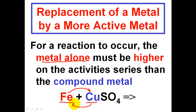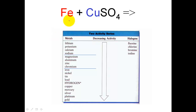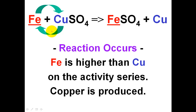Let's look at the activity series to see if this reaction happens. Our reactants are iron and copper sulfate (CuSO₄), and we're going to key in on copper. Finding iron on the activity series — there's iron. In order for iron to bump out copper, iron has to be above copper on the series. And there's copper below it. Iron is more active than copper, and therefore the reaction will occur. Iron replaces copper, and copper ends up alone as a product — a single replacement.